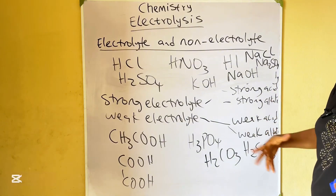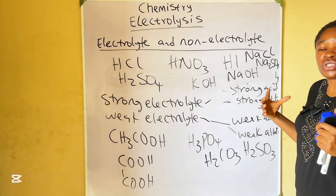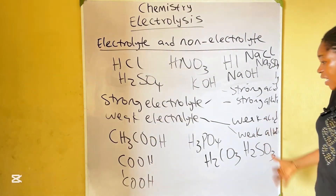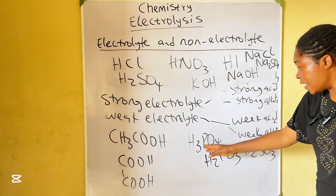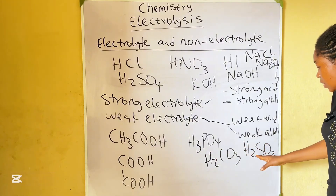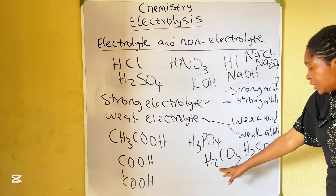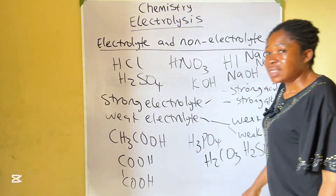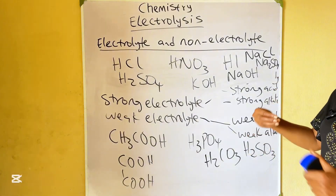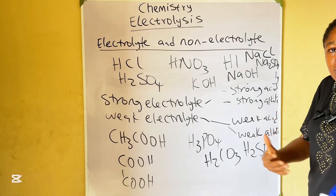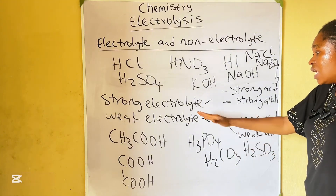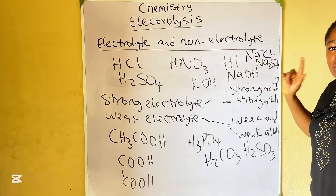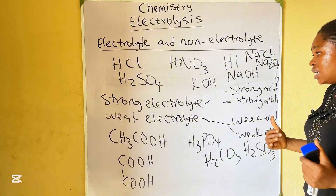Weak electrolytes include weak acids and weak alkalis. Examples of weak acids include H₂CO₄, H₂SO₃, H₂CO₃, and organic acids. Any salt that comes from a strong acid and weak base, or a weak acid and strong base, can also serve as a weak electrolyte. Non-electrolytes do not conduct electricity whether in molten form or in aqueous solution.